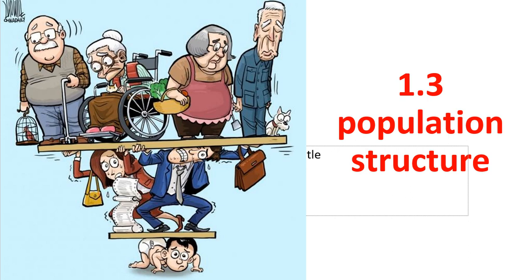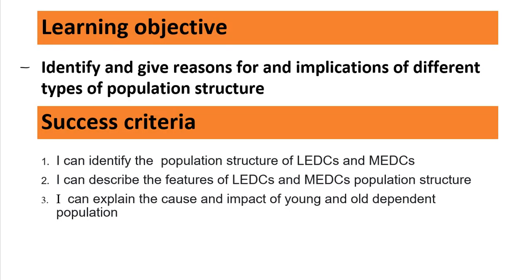This is lesson number six. We are looking at population structure. The learning objective is for us to be able to identify and give reasons for an implication of different types of population structure.